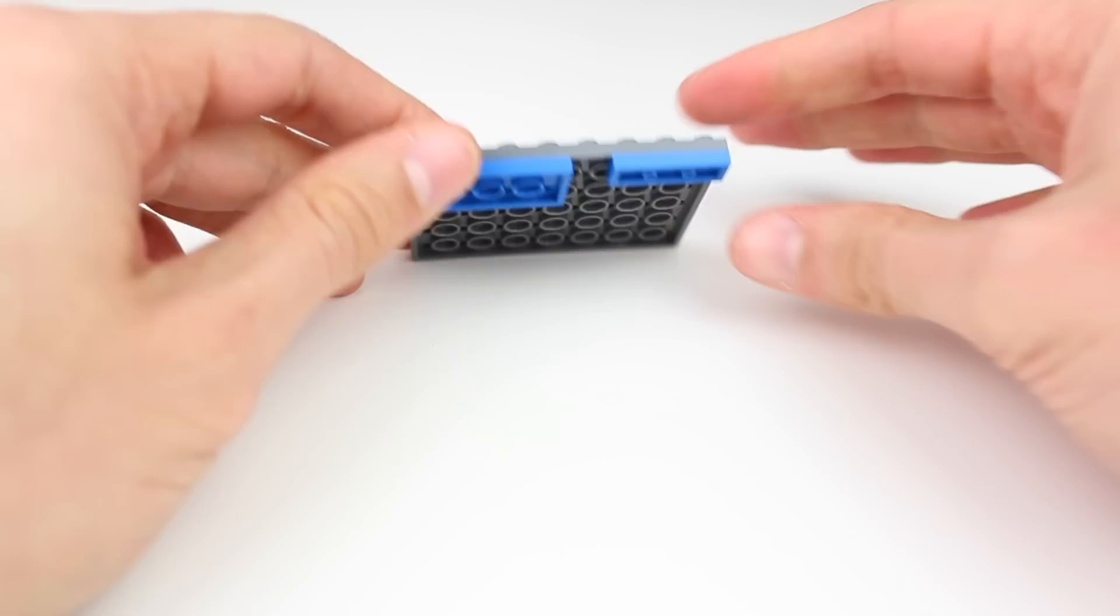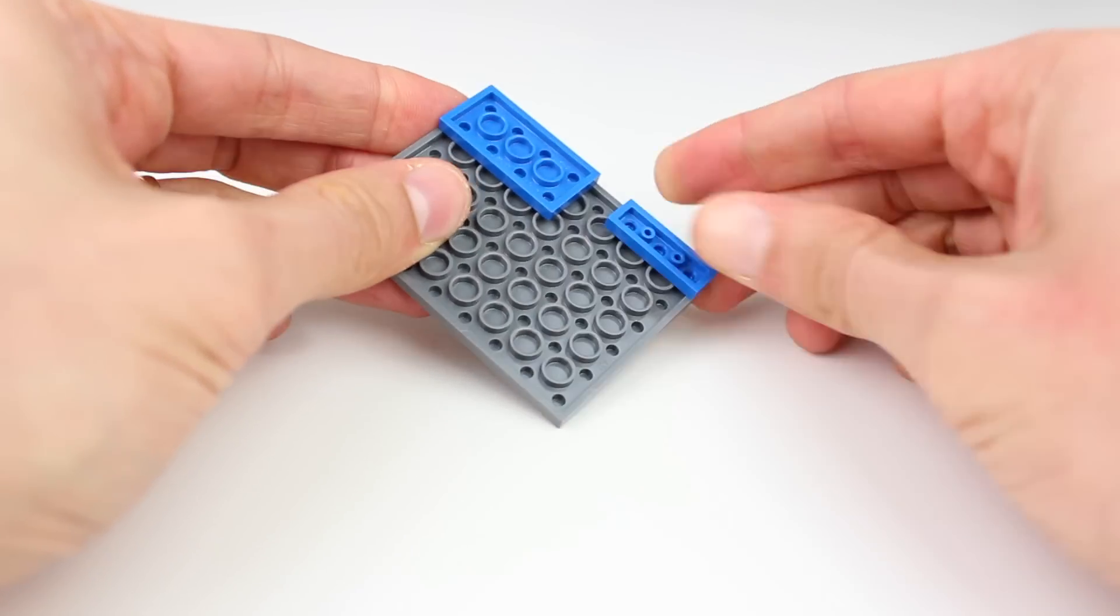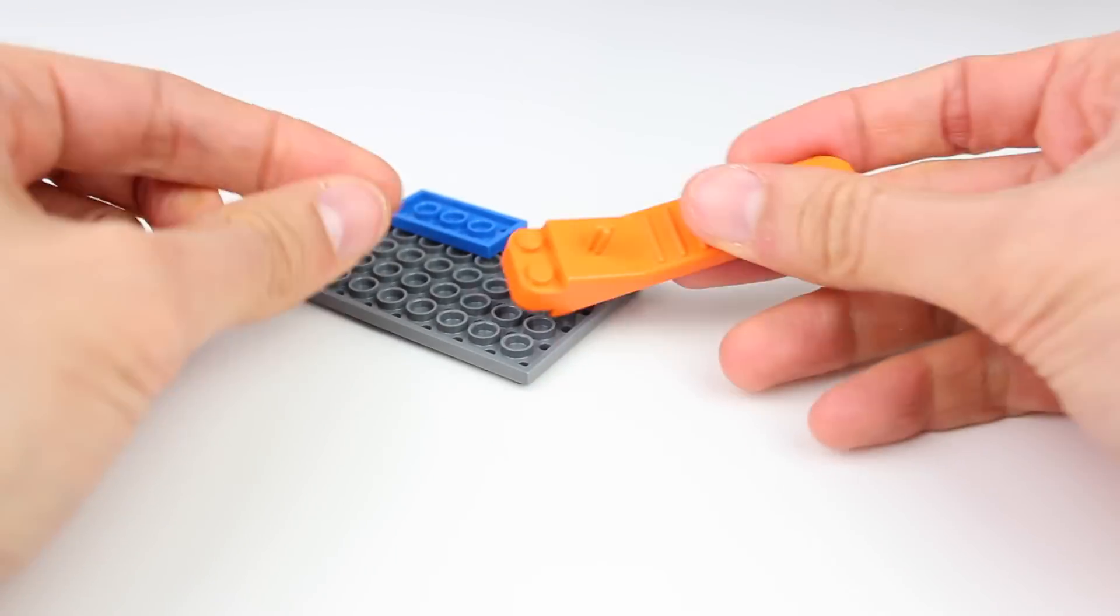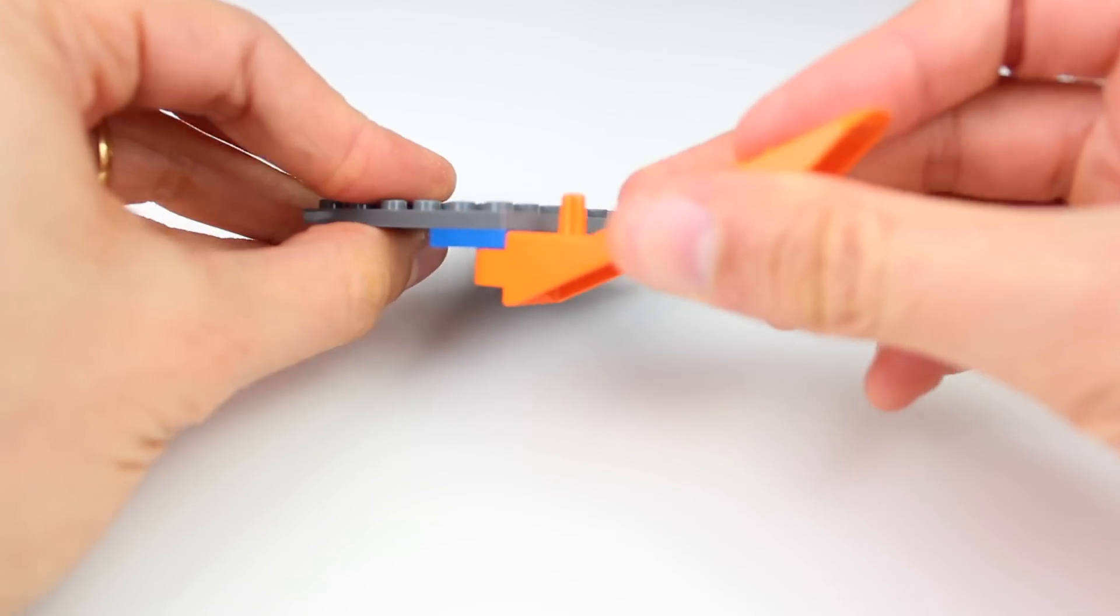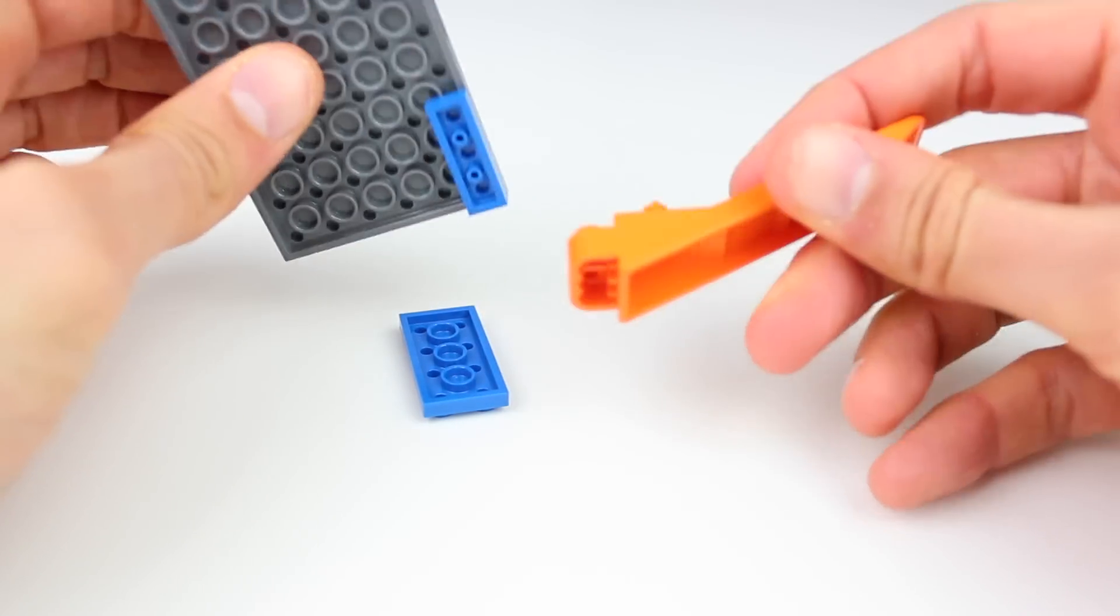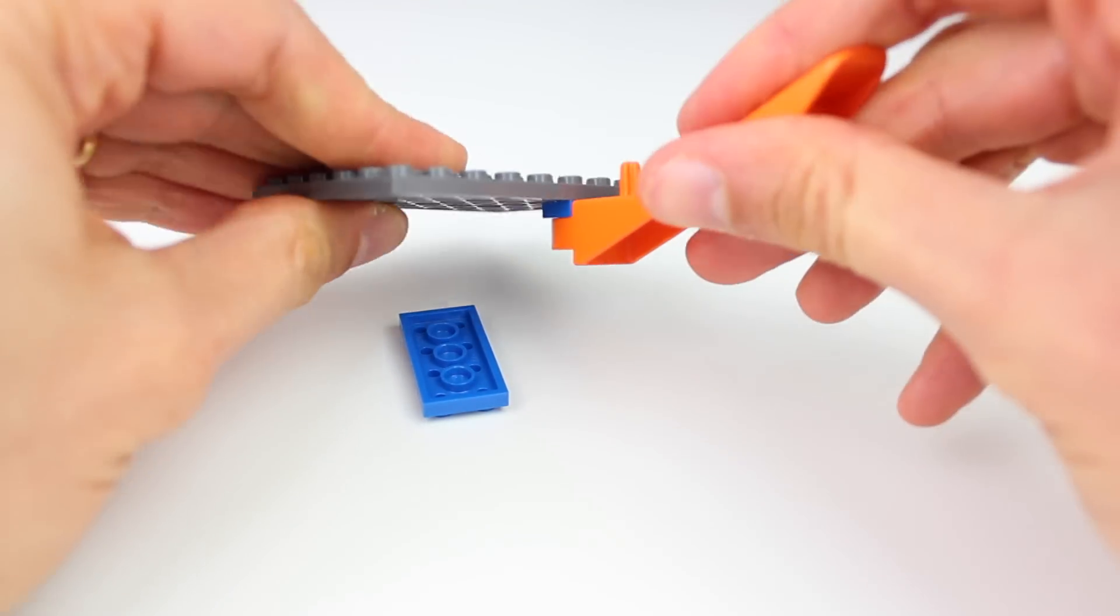You can also use the brick separator to take plates that are stuck underneath. For that, use this part of the brick separator, connect it, push up, and there you go. Very easy.